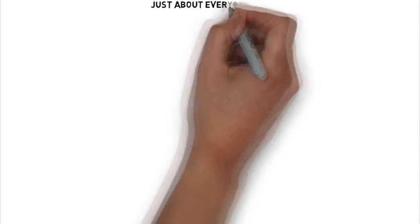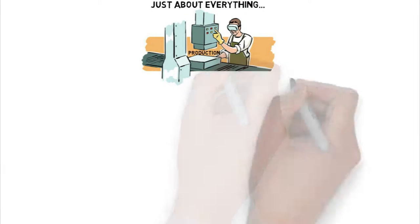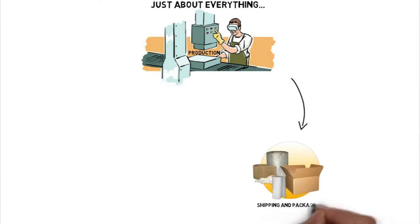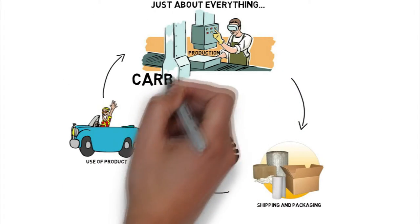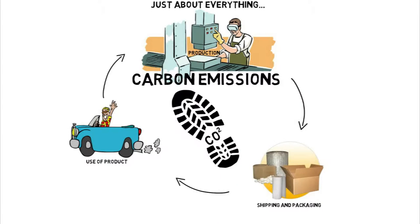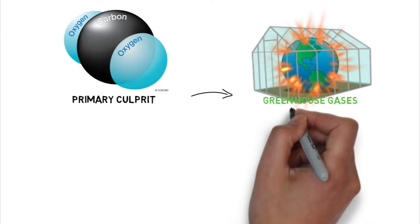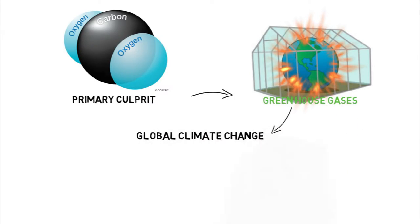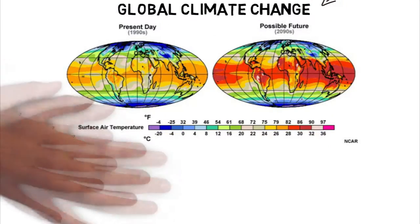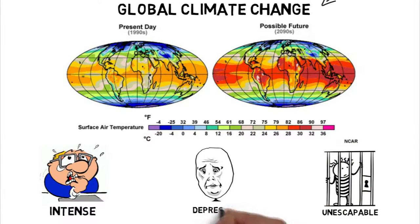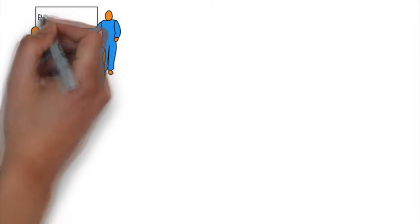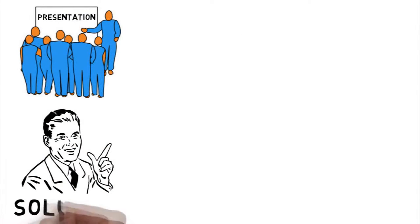Getting down to the nitty-gritty, this basically means that just about everything — from production of a product, the shipping and packaging, and even the use of the product itself — can and generally does create carbon emissions. And seeing as carbon is the primary culprit in the creation of greenhouse gases, which leads to global climate change, well, it feels a bit intense and inescapable. I know this all seems a little depressing, but don't worry — this wouldn't be much of a presentation if I didn't offer a solution.